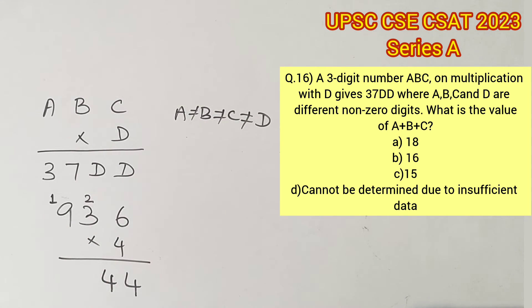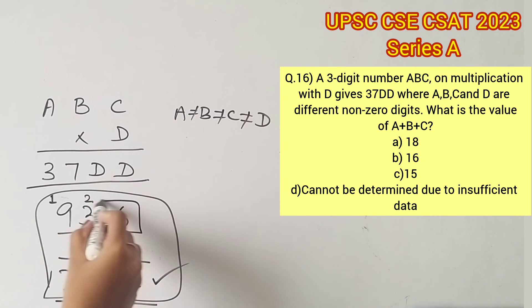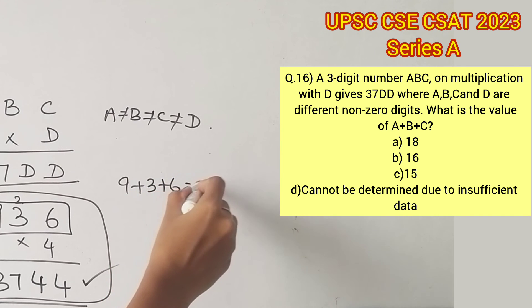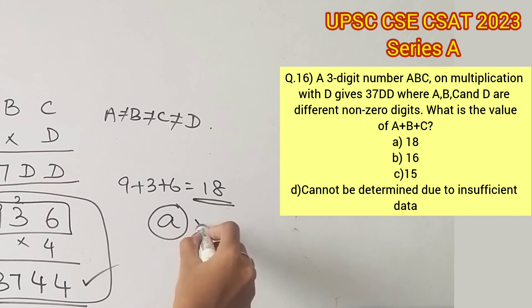Now if we multiply and check, the equation forms correctly. Since we are supposed to find the sum of these three digits A, B, and C, it will be 9 plus 3 plus 6, that is 18. Therefore option A is the right answer.